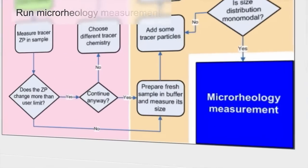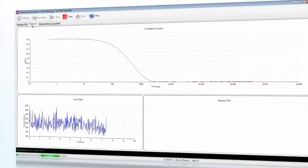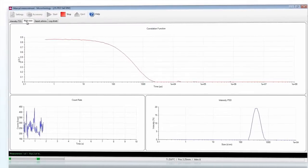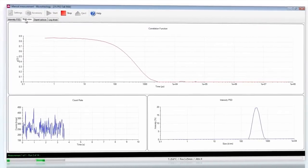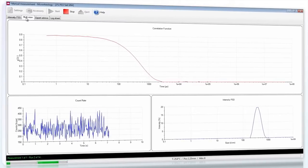Following optimization of the tracer particles used the microrheology measurement is run. Once a particular sample has been evaluated for a suitable tracer particle type, size and concentration then only the microrheology measurement step needs to be run to extract rheology data for subsequent tests.